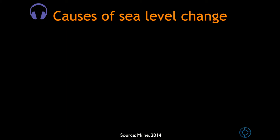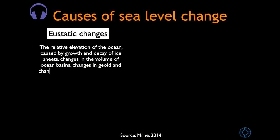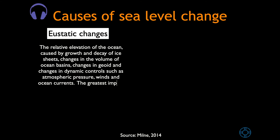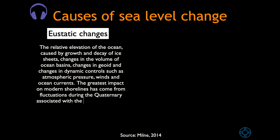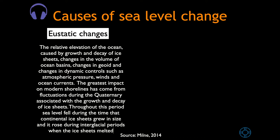Now we are going to talk about some of the causes of sea level change. We can initially highlight the eustatic changes: the relative elevation of the ocean caused by growth and decay of ice sheets, changes in the volume of ocean basins, changes in geoids, and changes in dynamic controls such as atmospheric pressure, winds, and ocean currents. The greatest impact on modern shorelines has come from fluctuations during the Quaternary associated with the growth and decay of ice sheets. Throughout this period, sea level fell during the time that continental ice sheets grew in size, and it rose during interglacial periods when the ice sheets melted.